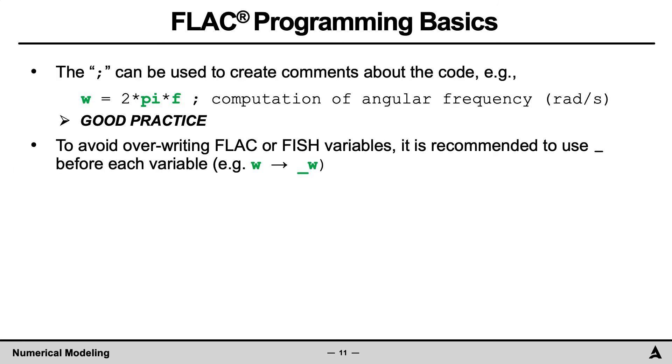In FISH, the semicolon can be used to create comments about the code. As with any programming language, this is good practice. In addition, to avoid overriding intrinsic FLAC or FISH variables, it is recommended to use an additional symbol before the variable, such as an underscore.